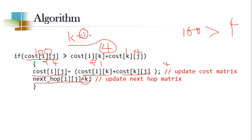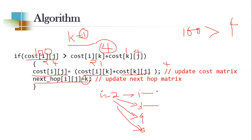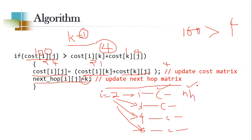An important point: in distance vector routing, nodes do not know about every other node — broadcasting doesn't happen. Each node has only its own routing table covering itself and its immediate neighbors. For source node 2, the routing table lists destinations 2→1, 2→2, 2→3, 2→4, 2→5 with corresponding cost and next hop values. The cost comes from the cost matrix and the next hop comes from the next hop matrix.